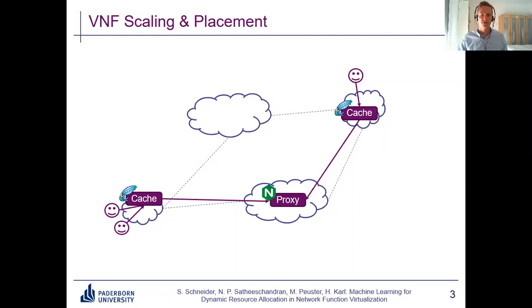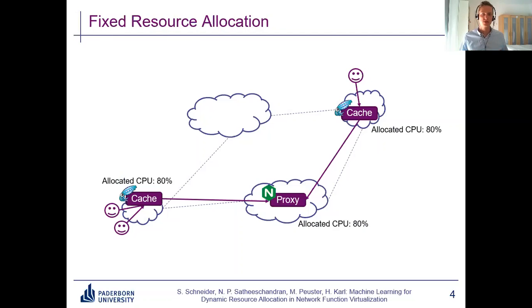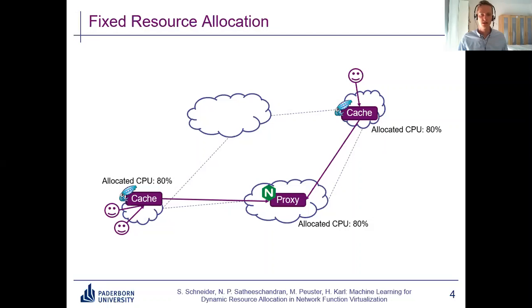So far I've only talked about horizontal scaling — starting a new instance of a VNF. But what about vertical scaling? What about how much resources to allocate to a new or individual instance? The most common approach today is still fixed resource allocation, meaning we allocate the same fixed amount of resources for all instances of a specific VNF — for example, 80% CPU to all VNF instances.